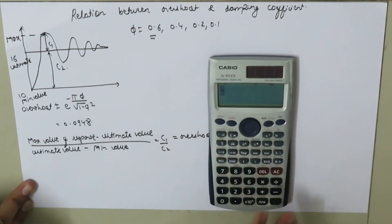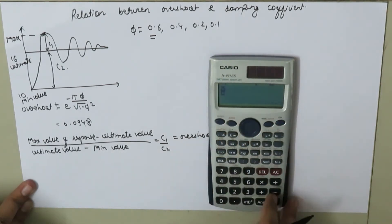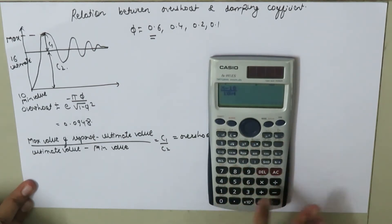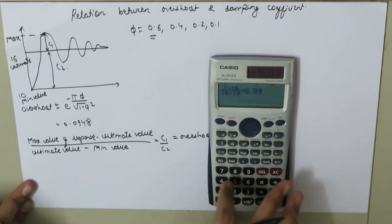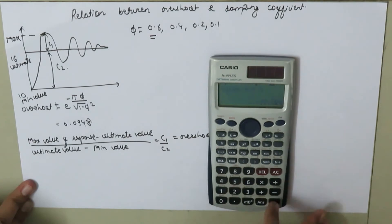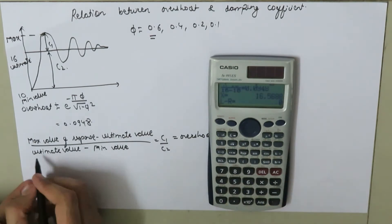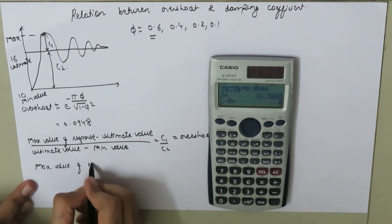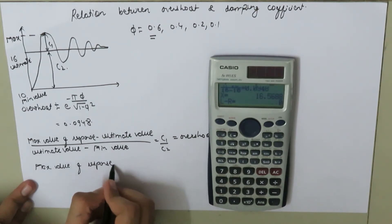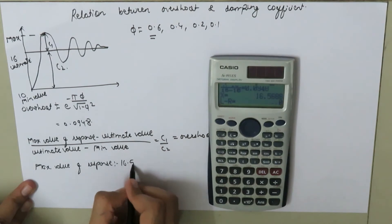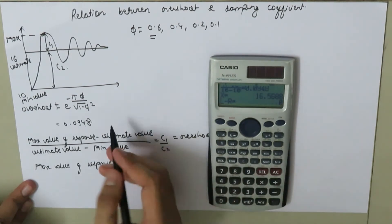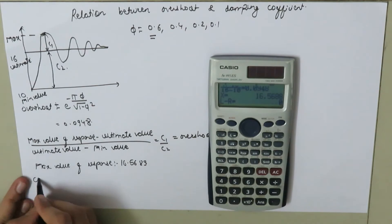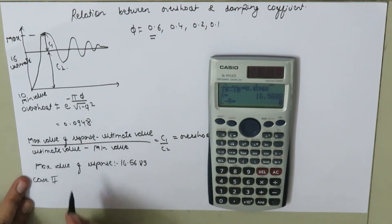In case 1, the equation becomes: x minus 16, divided by 16 minus 10, equals 0.0948. Solving this, our maximum value of response is 16.5689.